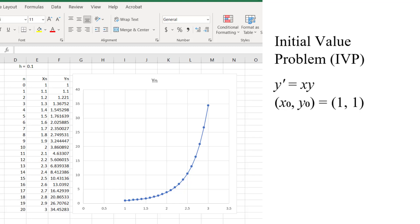This initial value problem, y prime equals x times y with initial condition (x0, y0) equals (1,1) can be solved by separation of variables, which is explained in another video. The solution is y equals e to the power (x squared minus 1) over 2.